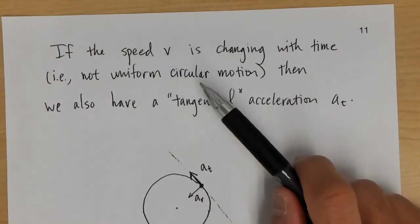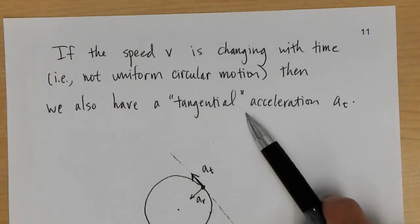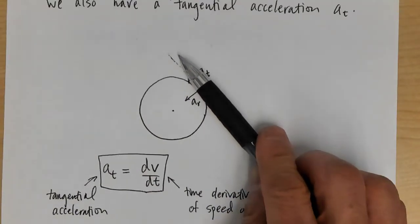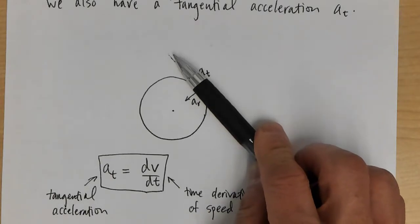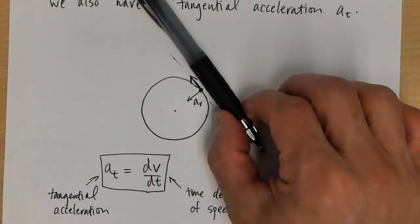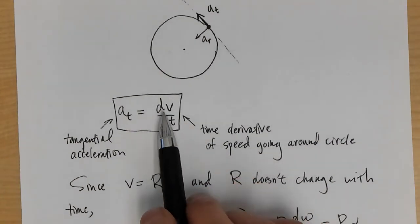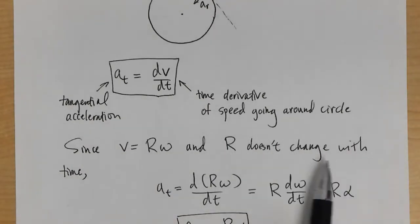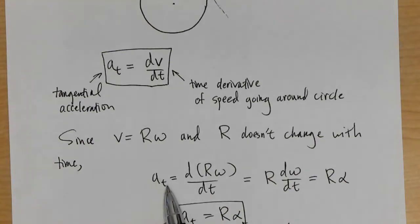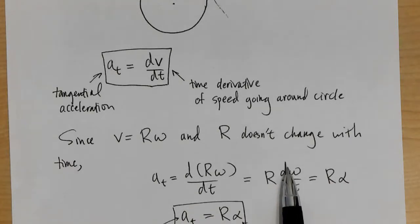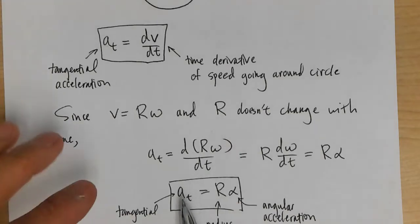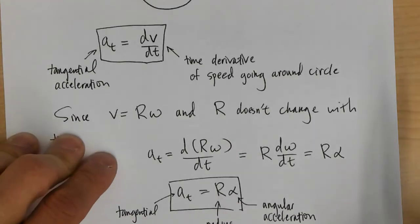If the speed is changing (non-uniform circular motion), there is also a tangential acceleration AT tangent to the circle — in the direction of motion if speeding up, opposite if slowing down. Since V = Rω and R is constant, AT = R·(dω/dt) = R·α. So tangential acceleration equals radius times angular acceleration.